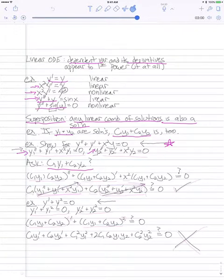So that whole solution double prime plus that whole solution prime plus x squared times that whole solution, does that equal 0, hence satisfying the original equation?